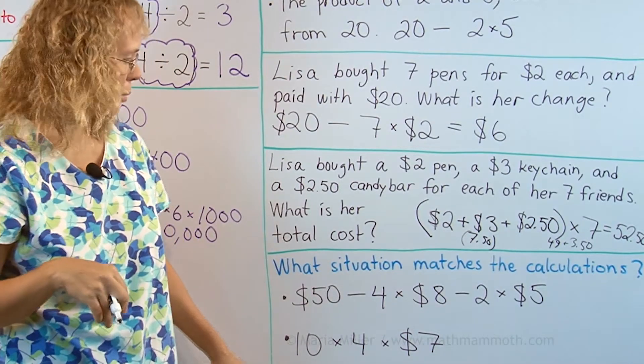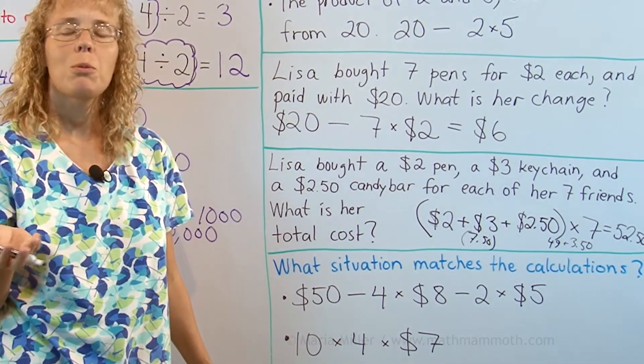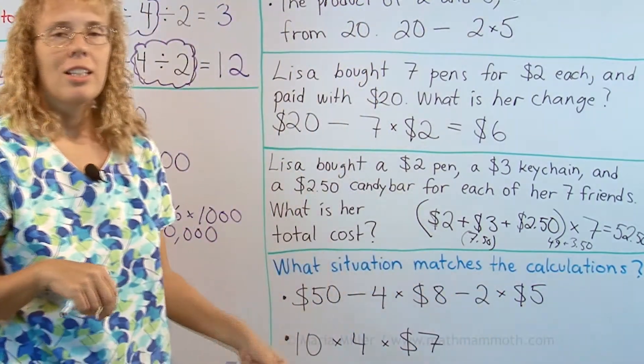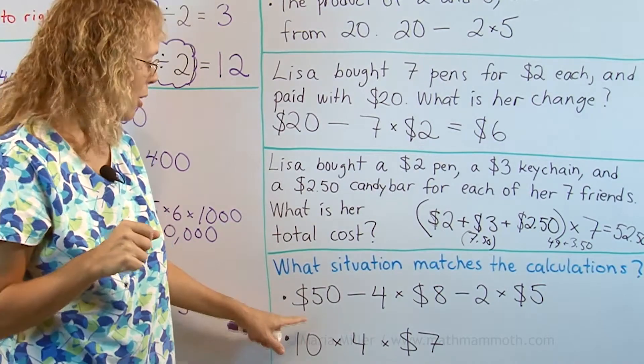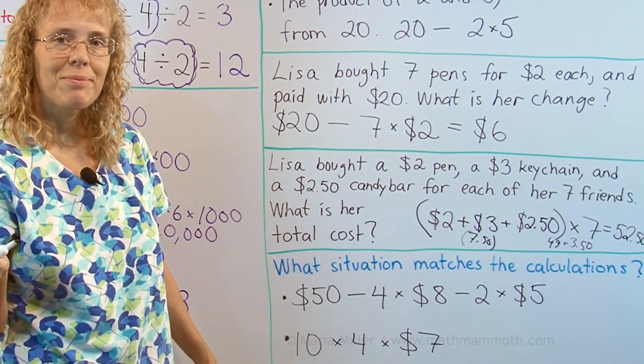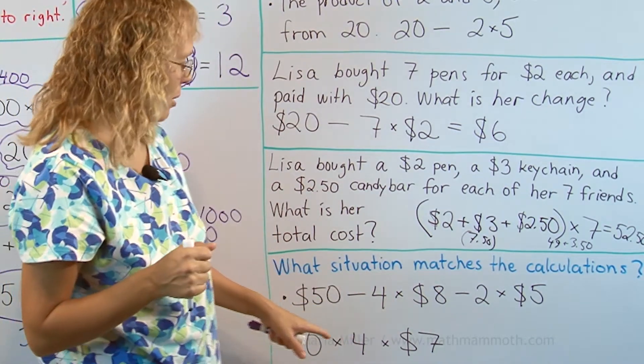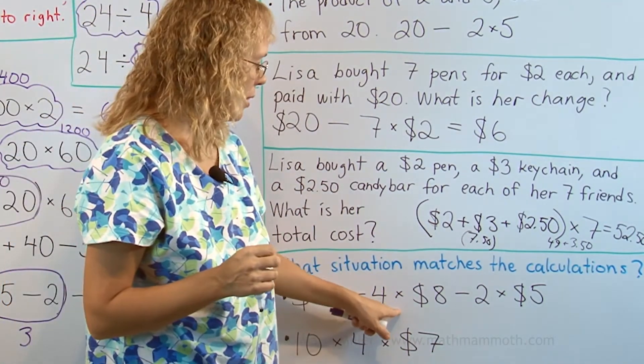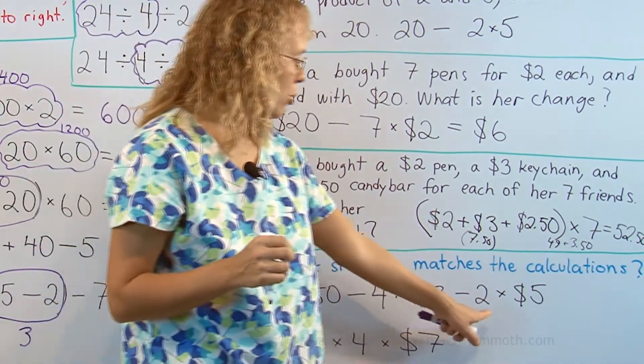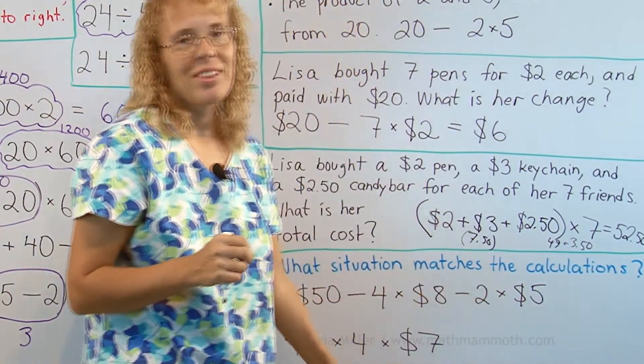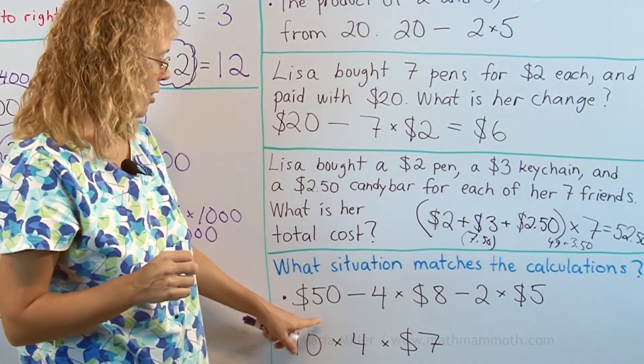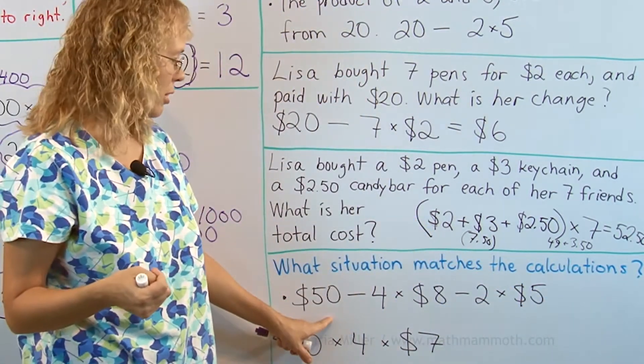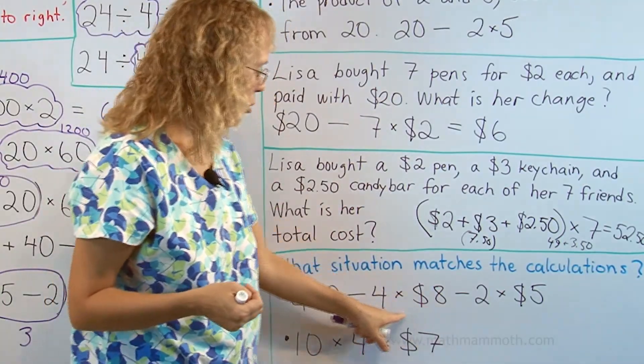Lastly, let's think of it the opposite way. We are given an expression and then you have to think of a word problem or situation that matches that expression. 50 dollars minus 4 times 8 dollars minus 2 times 5 dollars. It has money so it's probably a shopping situation that will work. I would say that here is somebody who went shopping and they bought 4 items that cost 8 dollars, maybe pieces of chicken. Then they also bought 2 pieces of cheese, each piece being 5 dollars. And then this here is subtracted. So they paid with 50 dollars and then this whole expression will give you the change. 50 dollars take away the 32 dollars and take away the 10 dollars.